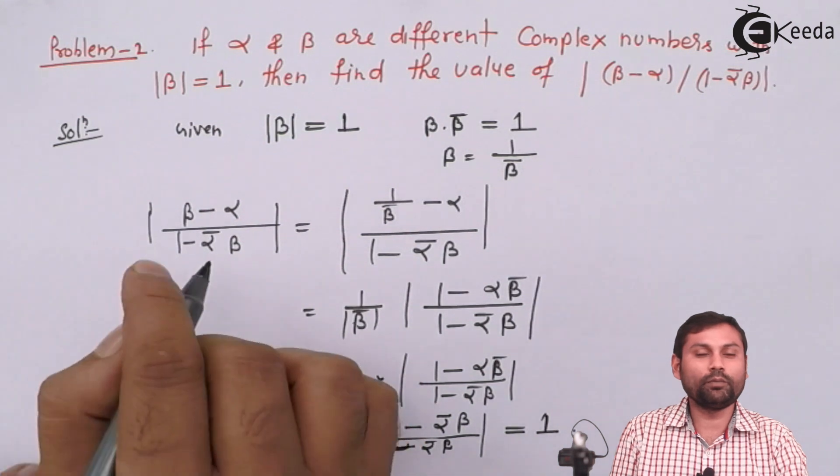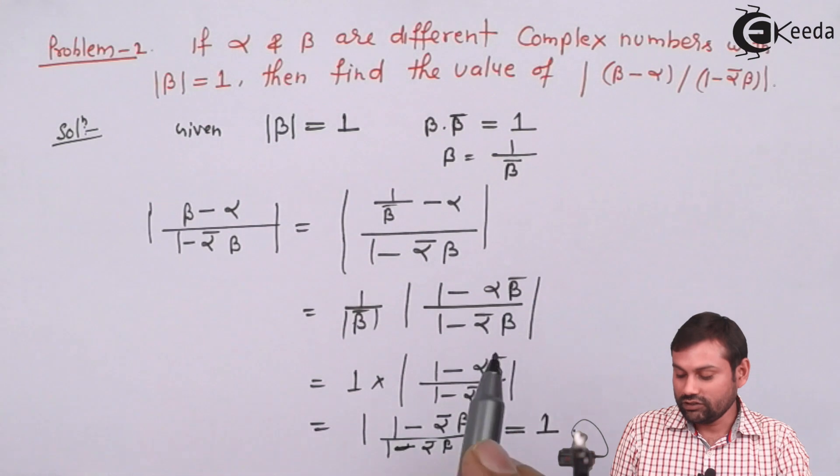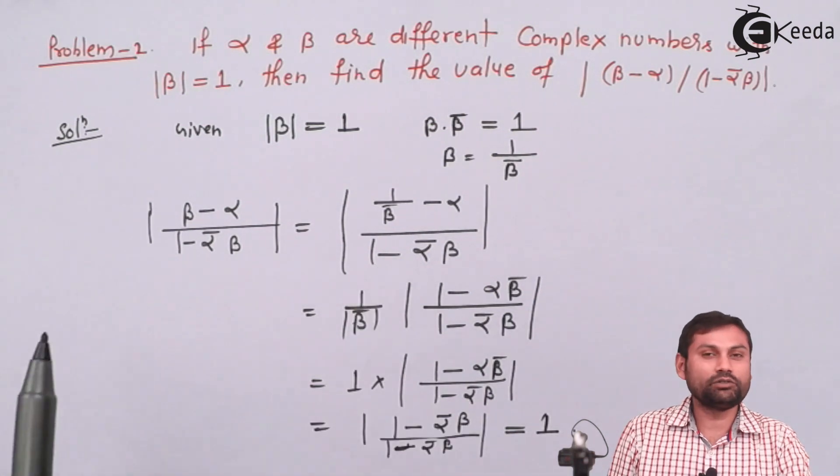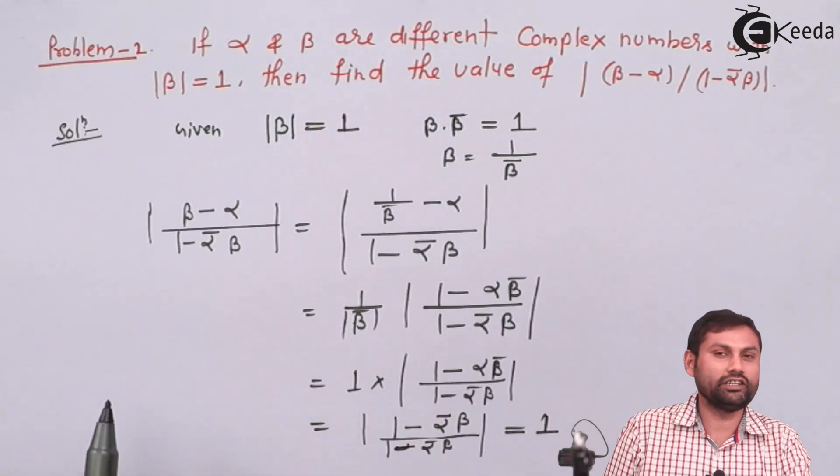This may seem a little complicated, but if you think about it, it's an easy question. You have to use 2-3 concepts: substitute β here, then take the conjugate. That's it.